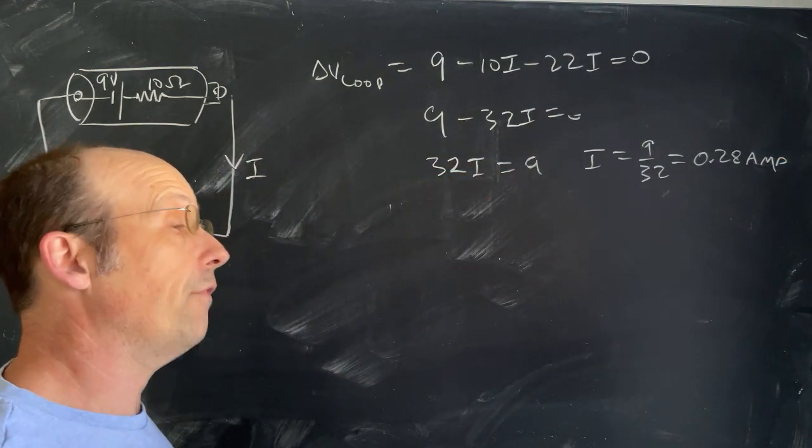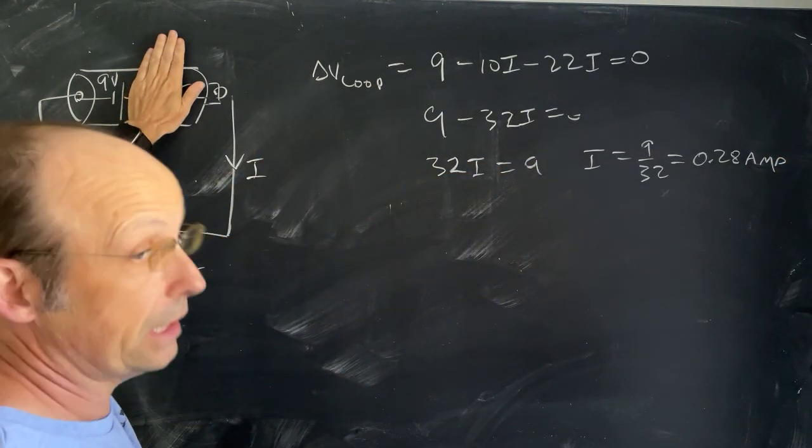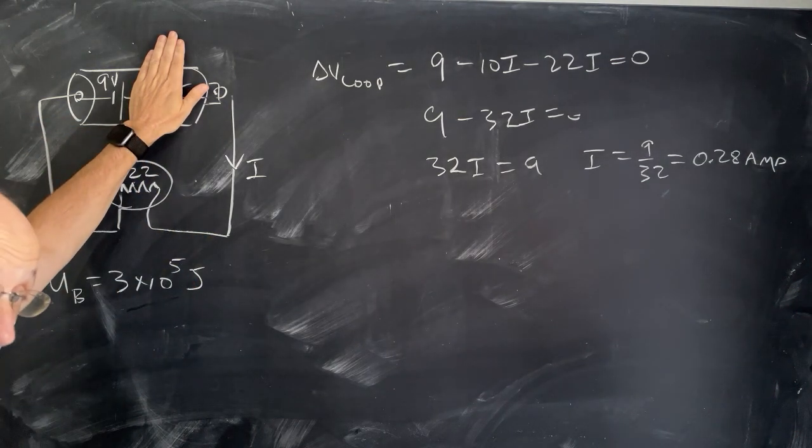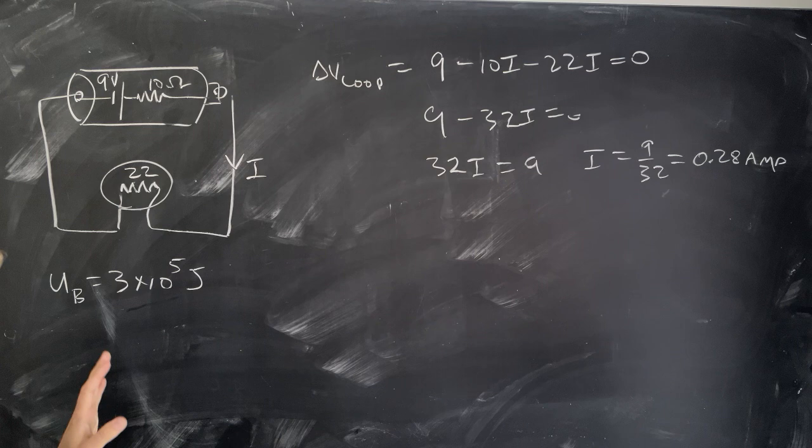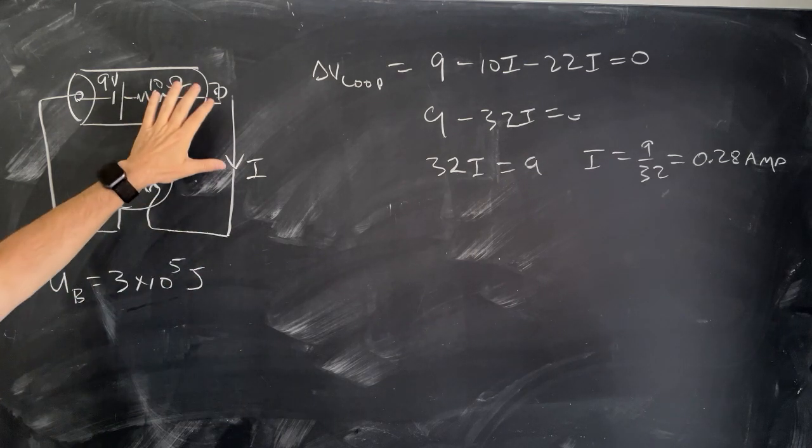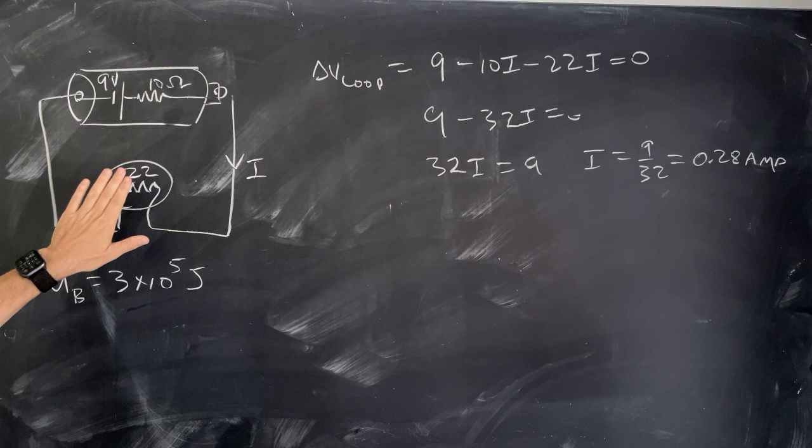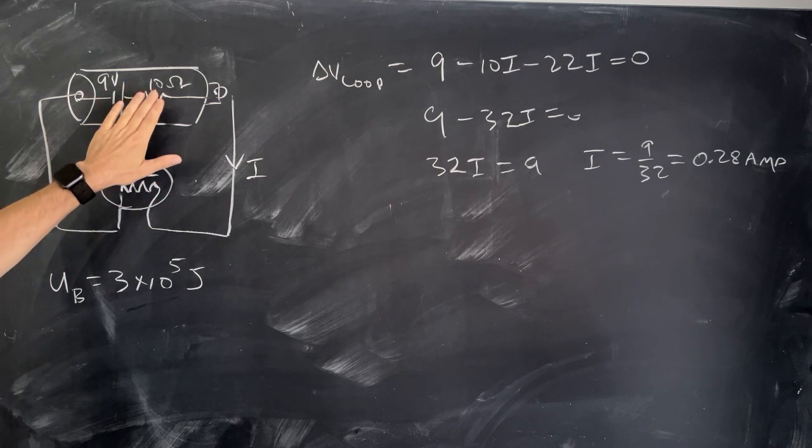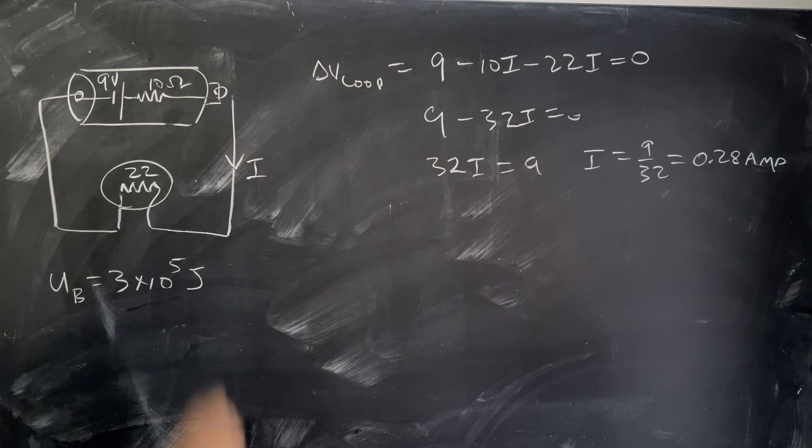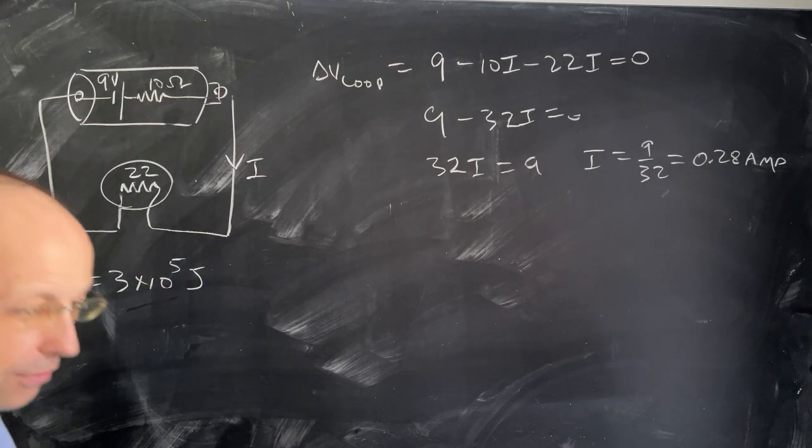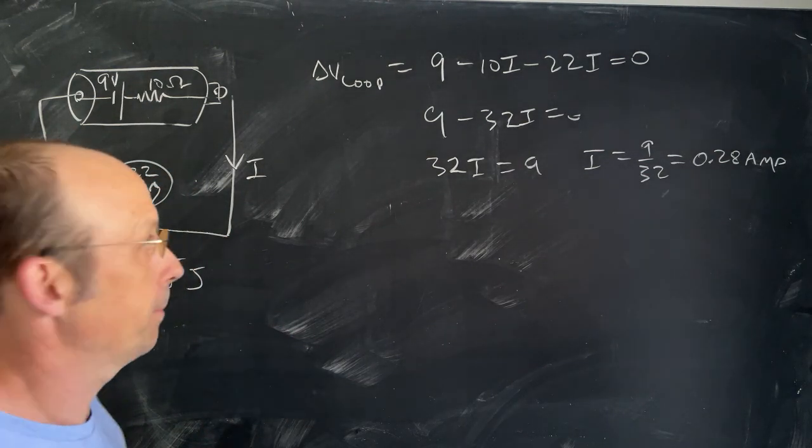Now notice that if you don't take into account the internal resistance, you're going to have a higher current because you're just going to say 9 volts divided by 22 instead of 32. But since it has an internal resistance, the lower the resistance that you hook it up to, the higher the voltage drop across the battery. And that's because it's a real battery.